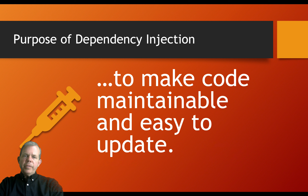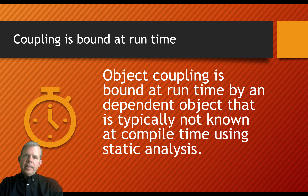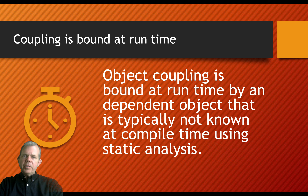The purpose of injection is to make code maintainable, easy to update, and also to enable testing. A key idea is that injection — passing by parameters — means that object coupling is bound at the runtime of your application rather than at compile time. So you won't get errors until you actually click the run button if you've done something wrong.